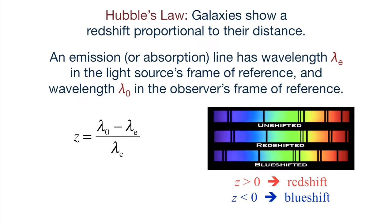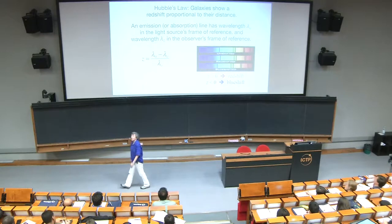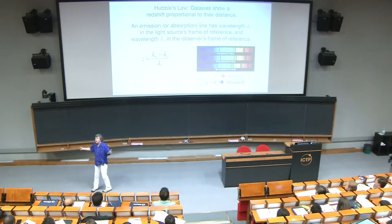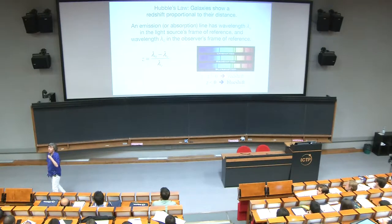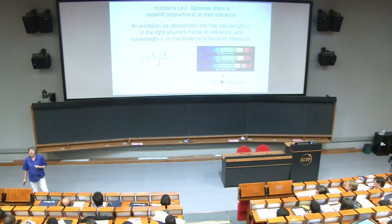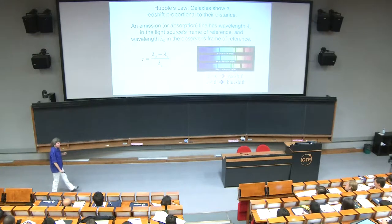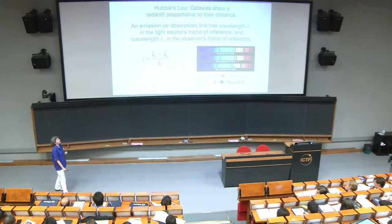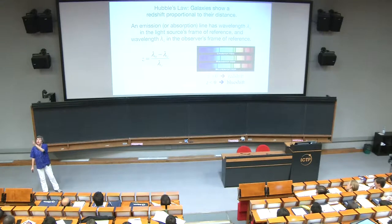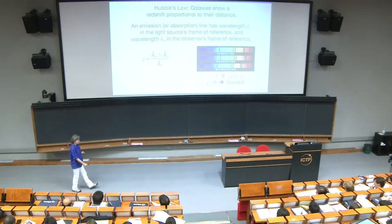Stars are opaque spheres that glow in the dark, and they have absorption lines in their spectra from the hydrogen and other elements in their atmospheres. Galaxies contain stars, so galaxies have absorption lines in their spectra; if they're active galactic nuclei, they also have emission lines from the hot gas being gobbled by the central black hole. In most cases it is relatively easy to measure the wavelength of the absorption and emission lines from galaxies.